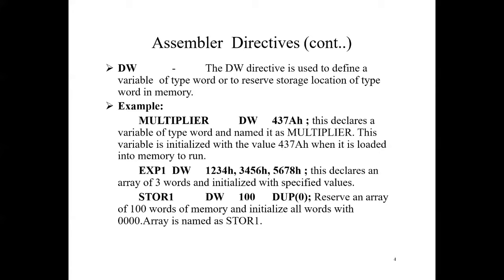Next is DT (Define 10 Bytes). This directive defines a variable of 10 bytes. If there is only one value, 10 bytes of consecutive memory locations are reserved; if there are multiple values, 10 consecutive memory locations are reserved for each. General format: name DT initial_value(s). Example: 'number DT 34968435876934839251' — this directive informs the assembler to reserve 10 bytes for the variable named 'number' and initialize it with the above value.